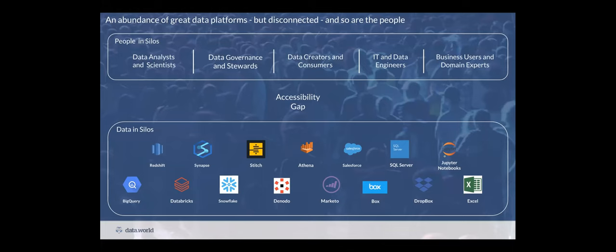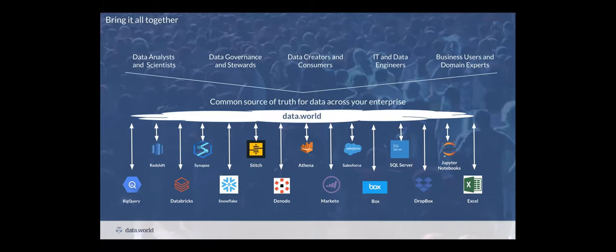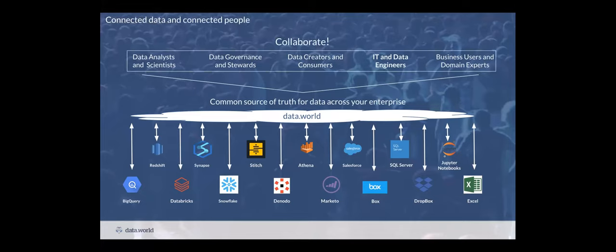So what we do as a catalog at Data.World is we go out to all of those data sources and we catalog them for you. We let you know what you have and where it is. You can specify if it's data that can be trustworthy, if it contains something confidential or has to be kept private. And that gives everybody a common source of truth across the whole enterprise, so they can start to collaborate and derive value from all of that data.